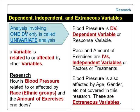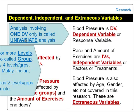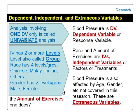An analysis involving one dependent variable is called univariate analysis. An independent variable has two or more levels. A level is also called a group or treatment.